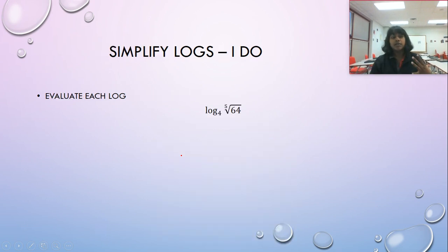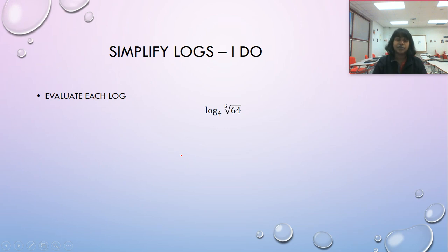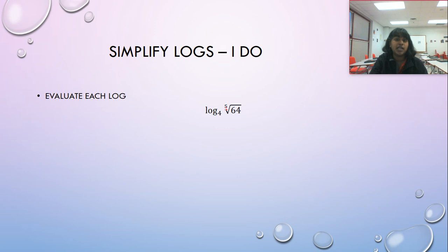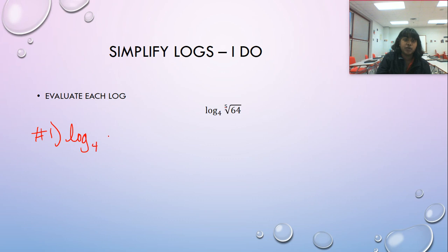Now, how do we evaluate these logs? This is similar to what we practiced last week. First, we deal with the ugly fifth root — as we know, all roots can be rewritten as a fraction exponent. So we rewrite it as log base four of 64 to the one fifth. This is now the power rule, so we drag that exponent forward: one fifth times log base four of 64.